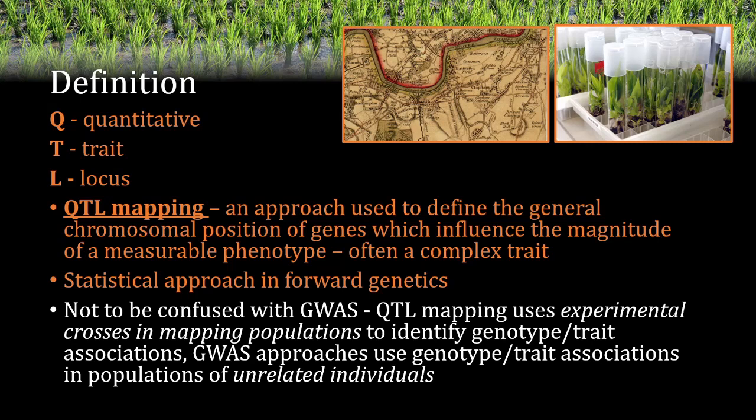QTL mapping can be classed as a forward genetic approach because we use the phenotype of interest and map it to a physical position within the genome using molecular markers. The question we are trying to answer is: what key loci are playing a role in our phenotype of interest, and where are they physically in the genome?